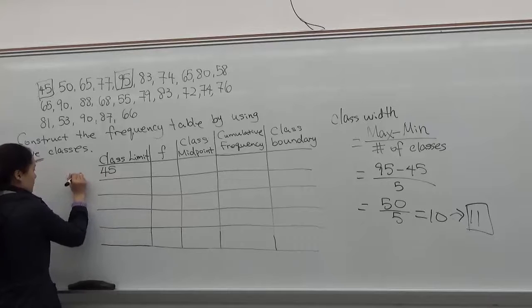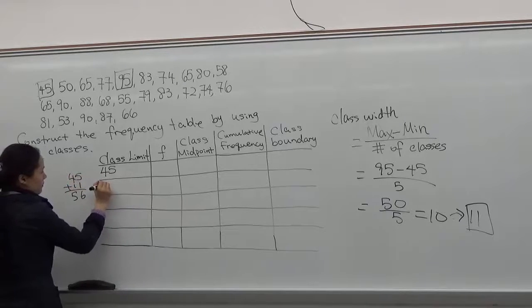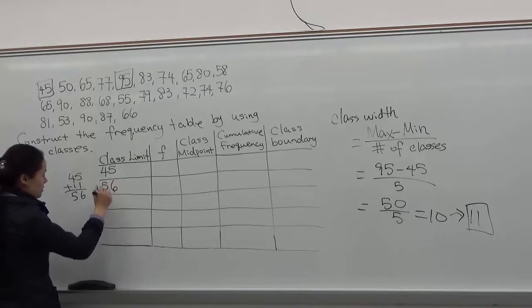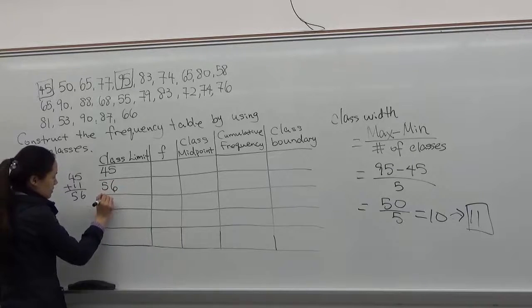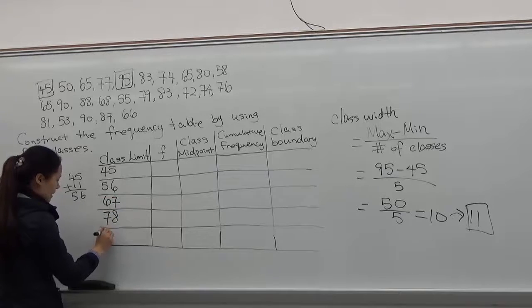45 plus 11 is 56. So you put 56. And keep adding 11 to the lower class limit. 67, 78, and 89.